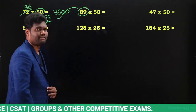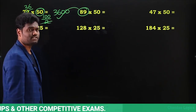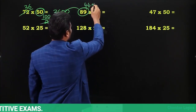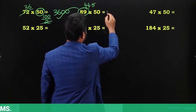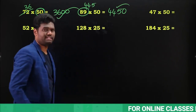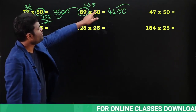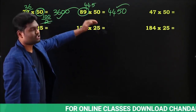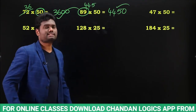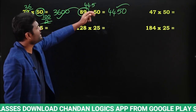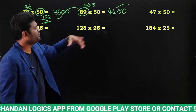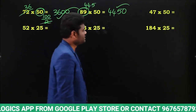Similarly, for 89×50: half of 80 is 40, half of 9 is 4.5, so together that gives 44.5. Multiply 44.5 by 100, which gives 4450. So the answer is 4450. You can write 50 as 100 by 2, so half of 89 is 44.5, and 44.5 into 100 is 4450.